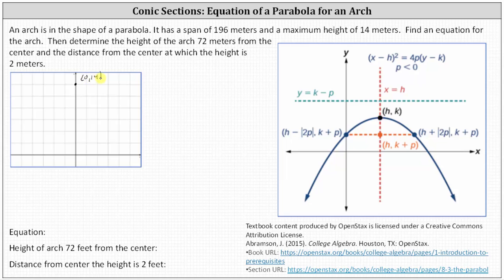And because the span is 196 meters, and 196 divided by two is equal to 98, we'll let one x-intercept be (98, 0) and the second intercept be (−98, 0). This indicates the parabola would look something like this.